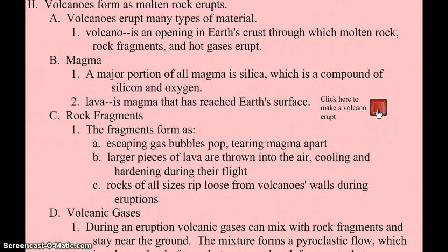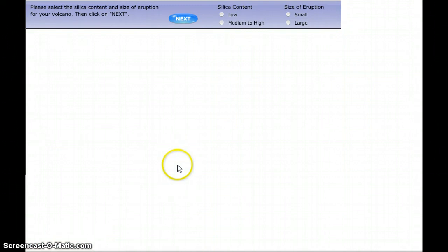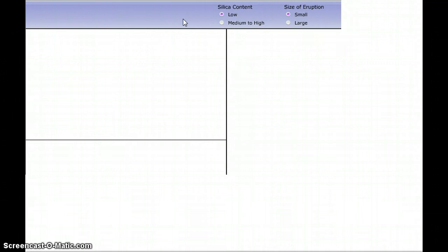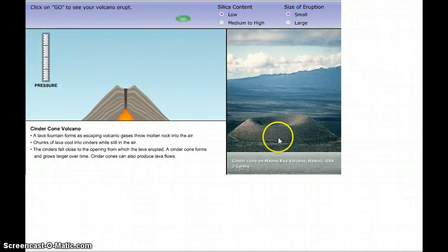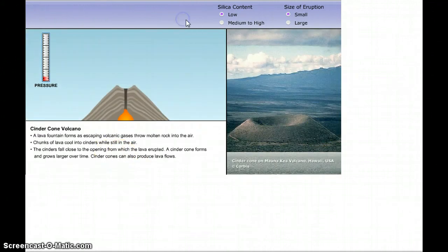This little animation right here shows some different types of volcanic eruptions. So if a volcano, a magma has low silica and it's a small eruption, this is what kind of volcano it's going to create. It's going to create something called a cinder cone volcano.